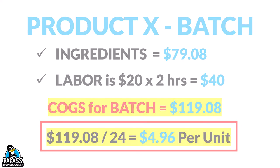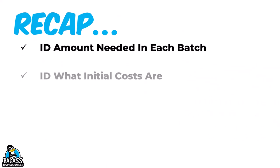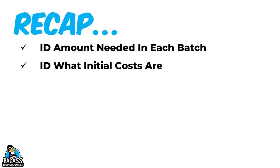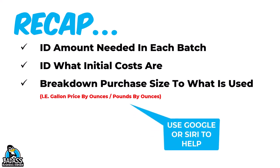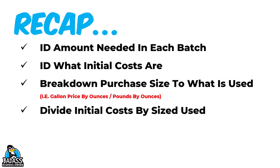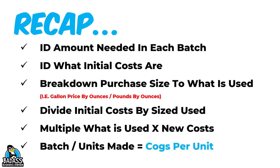Hopefully you were able to follow along. Here's a quick recap: First, identify the amount needed for each ingredient in the batch. Then identify the initial purchase costs. Next, break down how you purchase it into the size you actually use — for example, we went from gallons to ounces; you might go from pounds to ounces or even down to teaspoons. Google or Siri can be your best friend for those conversions. Then divide the initial cost by the unit size you're using, multiply by how much you use, total up the batch cost including labor, and finally divide by the number of units made to get your cost per unit.